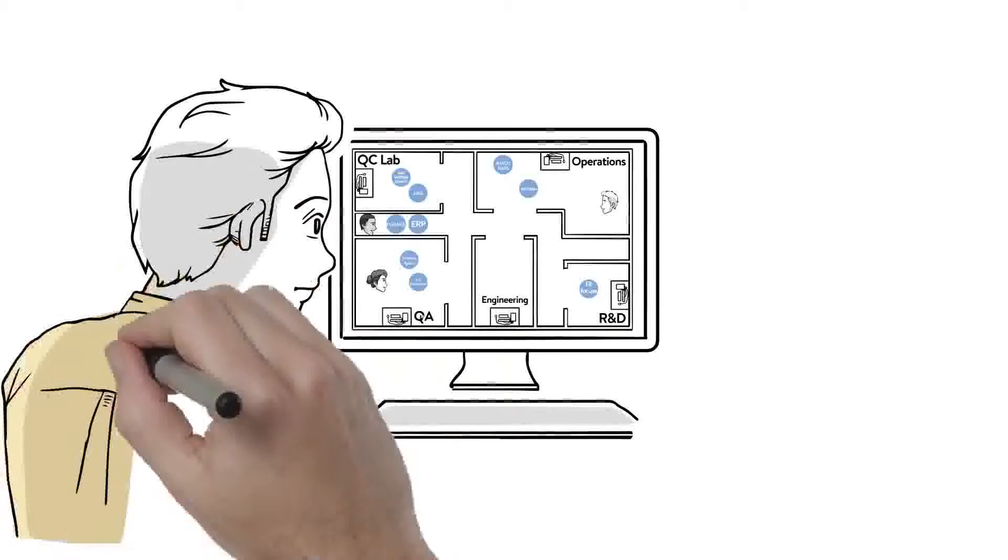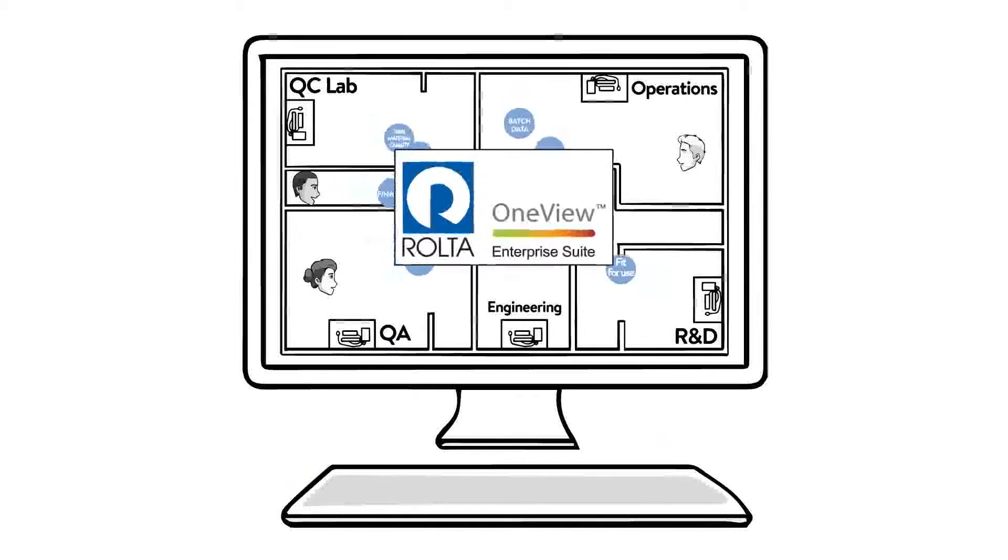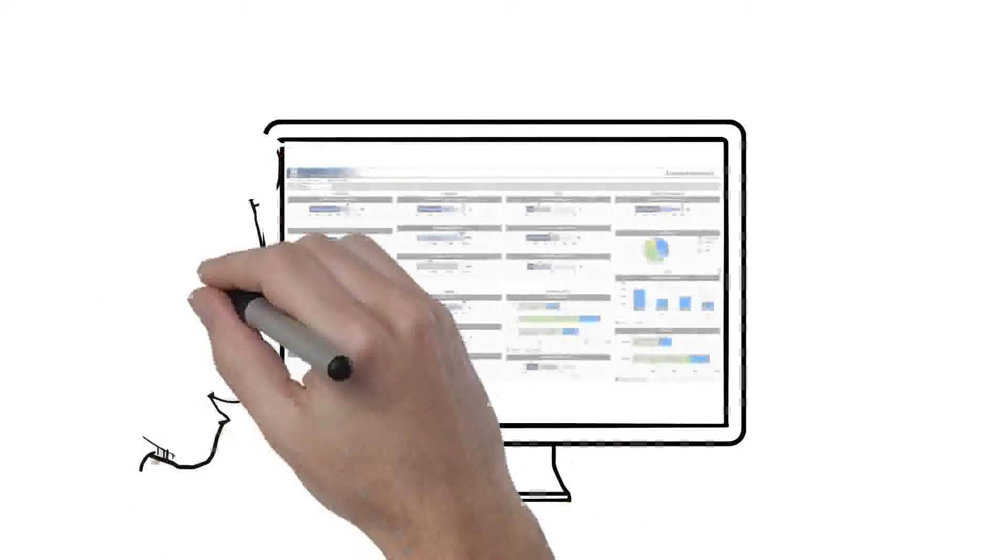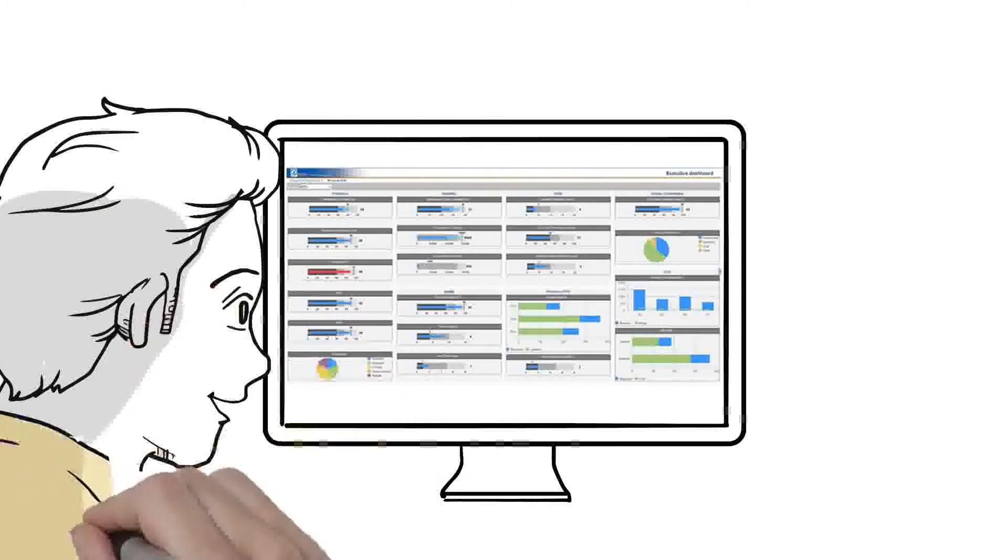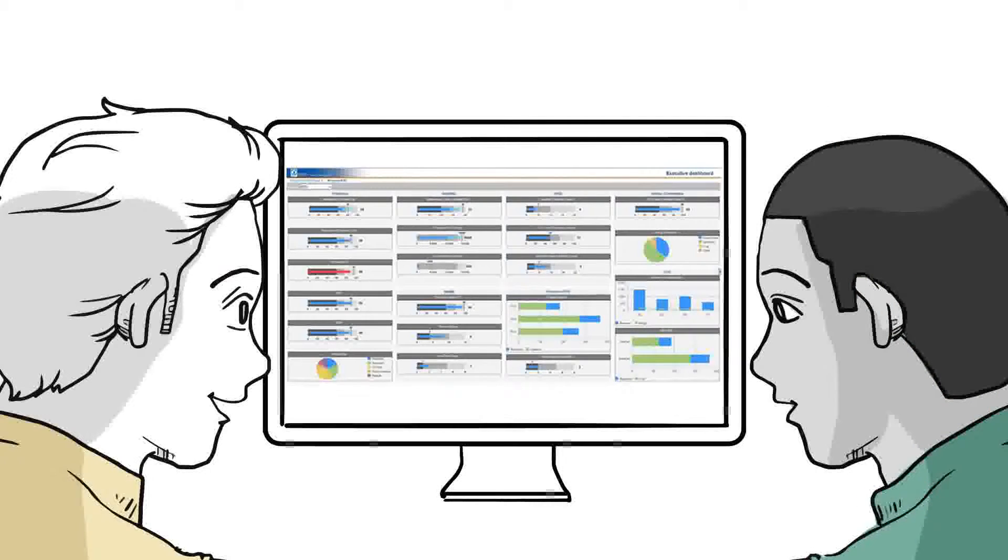Wouldn't it be great if there were an easier way for Garth, Jim, and Jenny to get the data from all of the different systems with one simplified way to look at it? There is. Rolta OneView brings data from disparate sources together and allows users to view it in one central location.